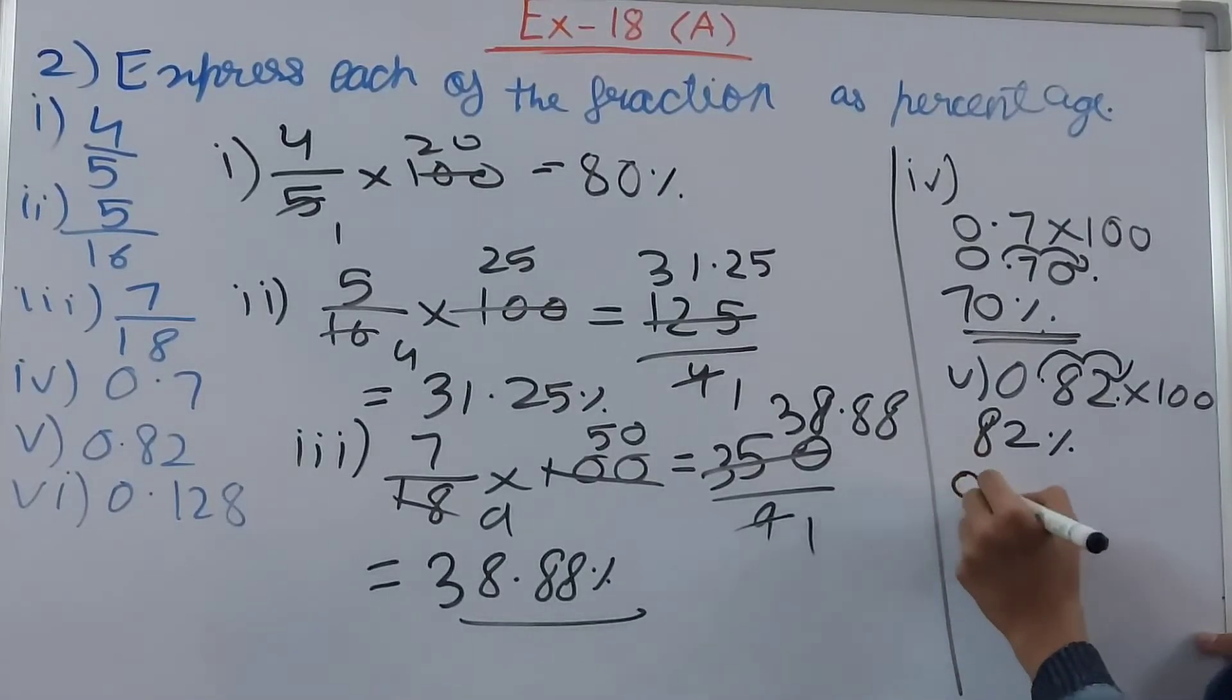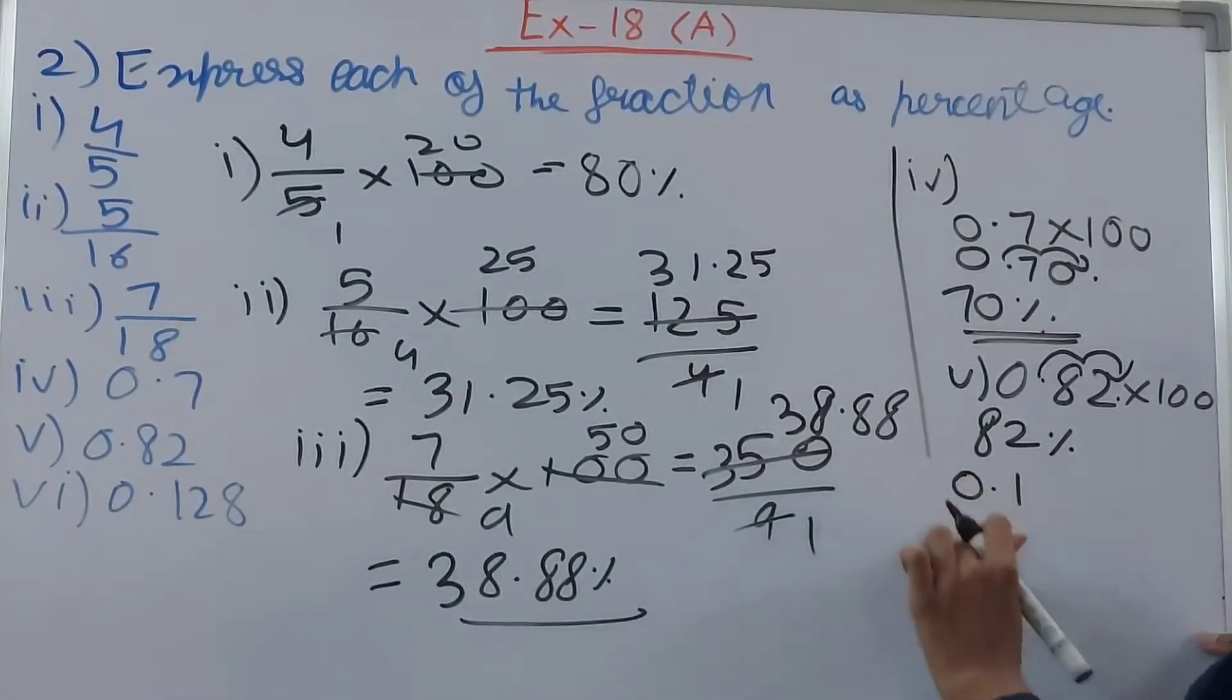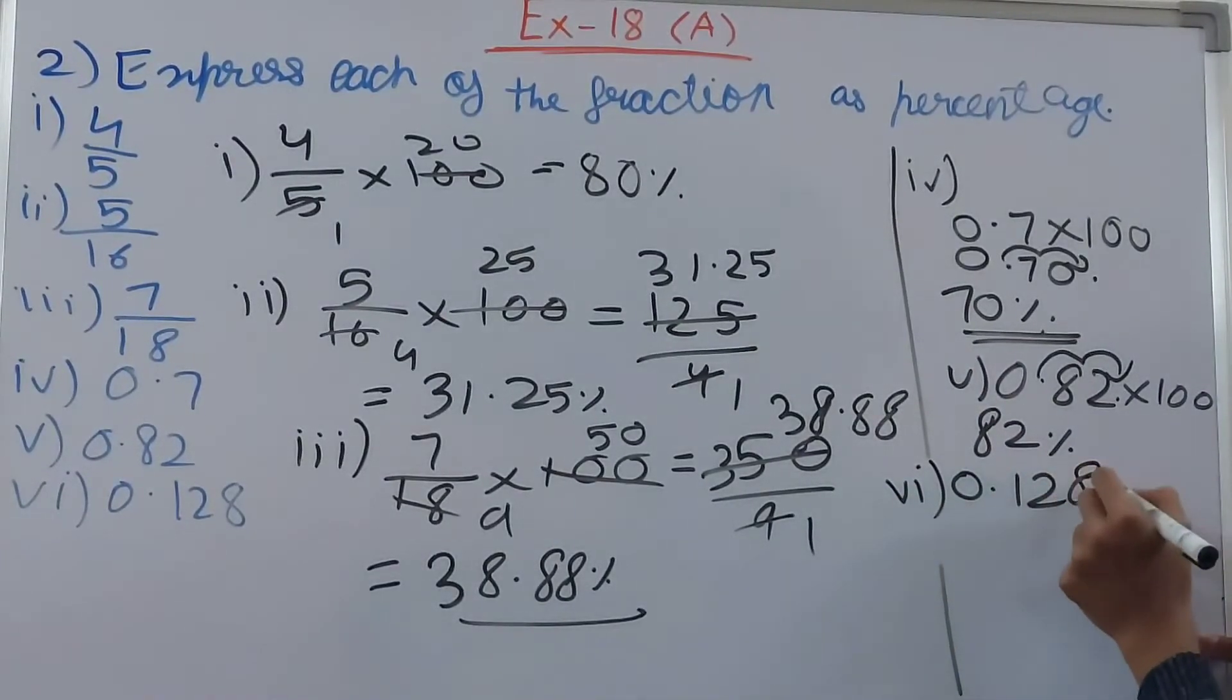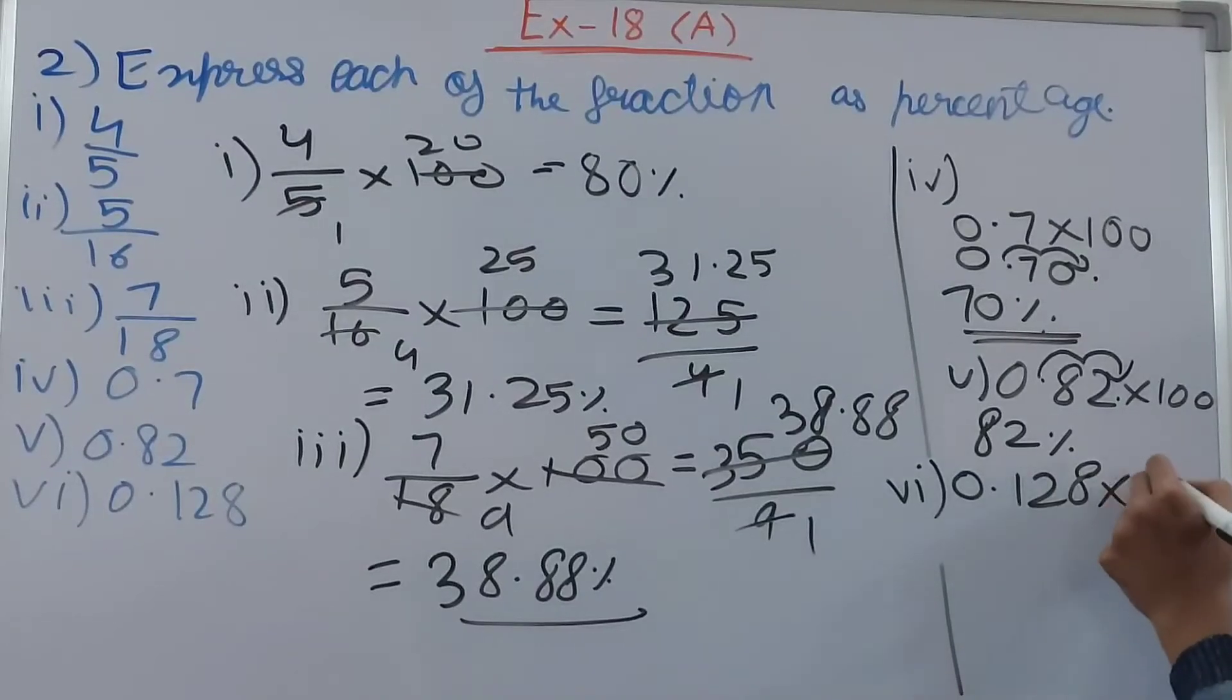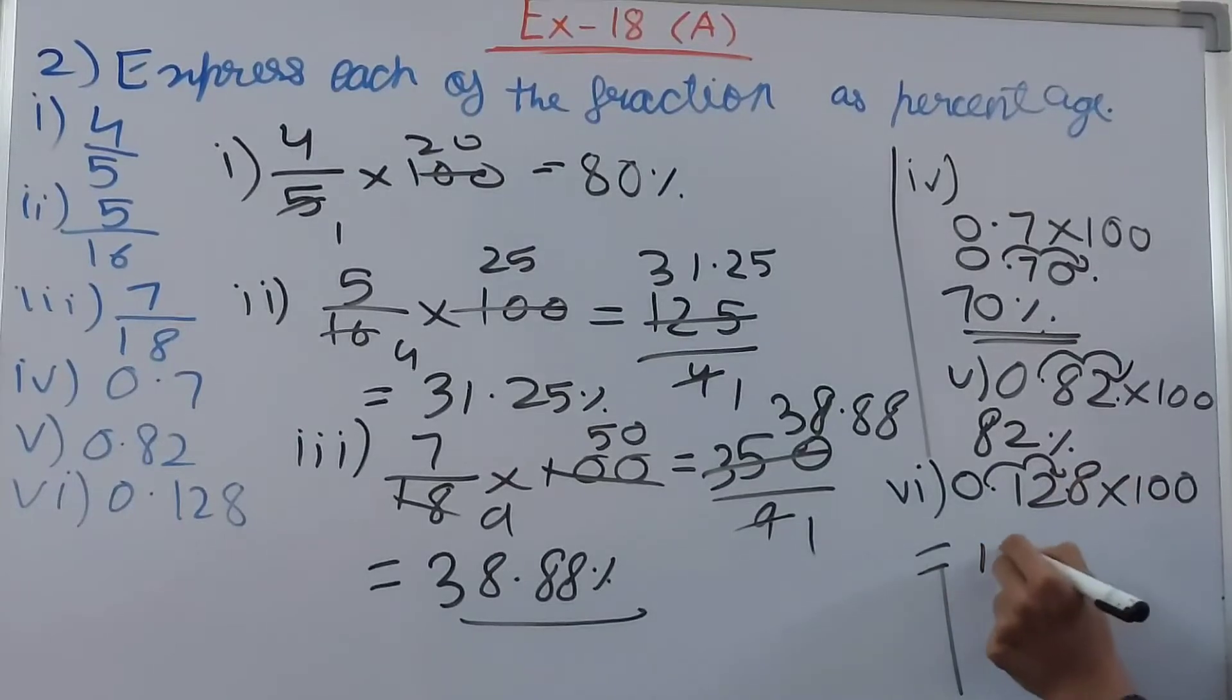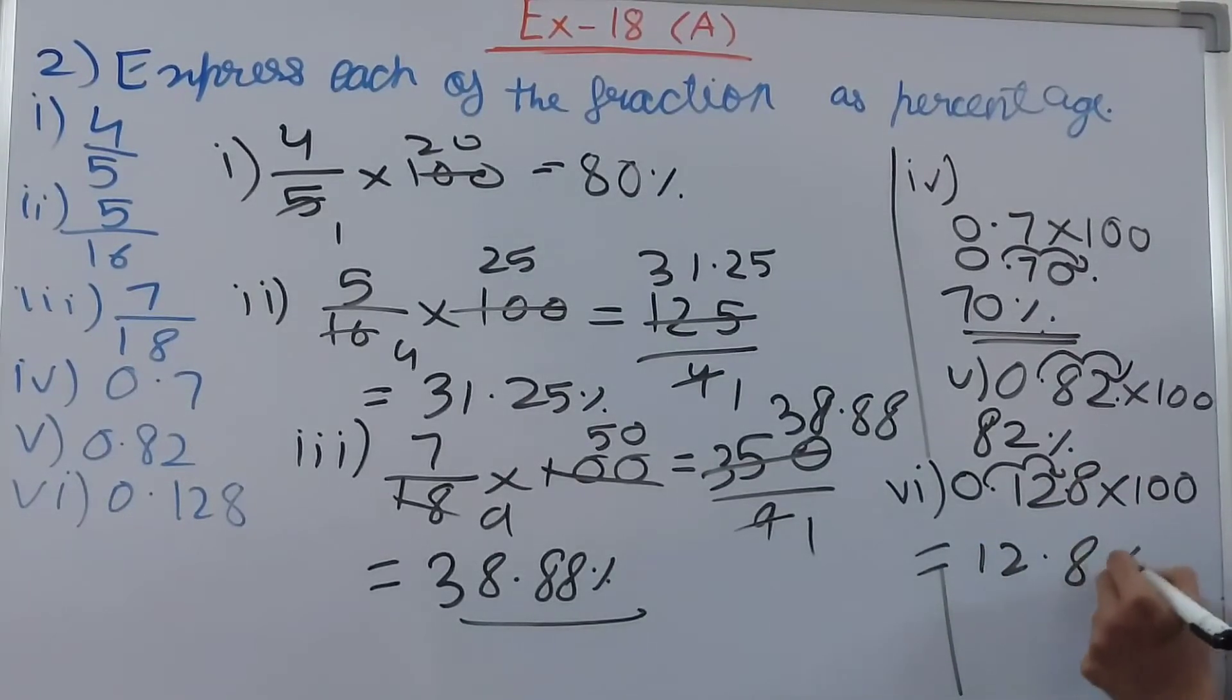Then next is 0.128, this is the sixth one. So 0.128, again multiply by 100. So this will give us 1 and 2 here, it will come, so we get 12.8 as a number and put the percentage sign, 12.8 percent.